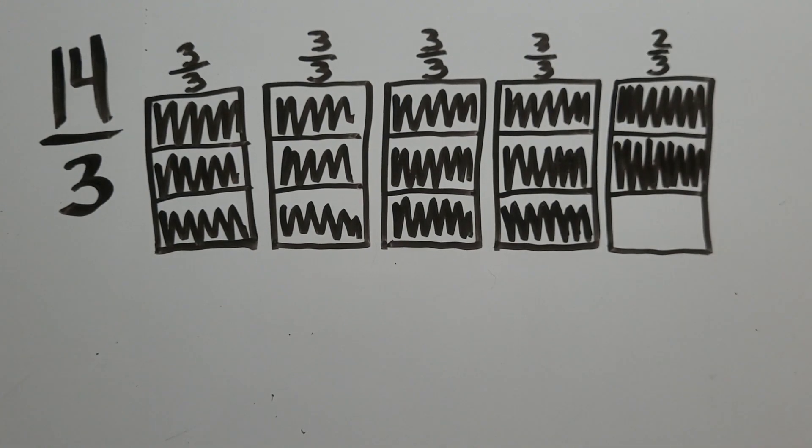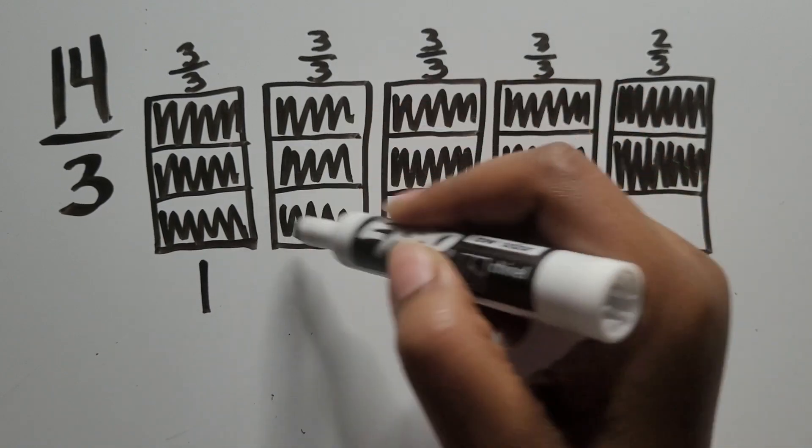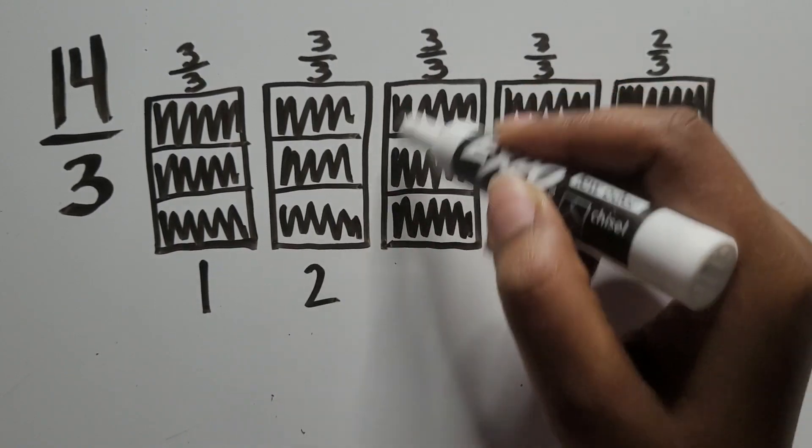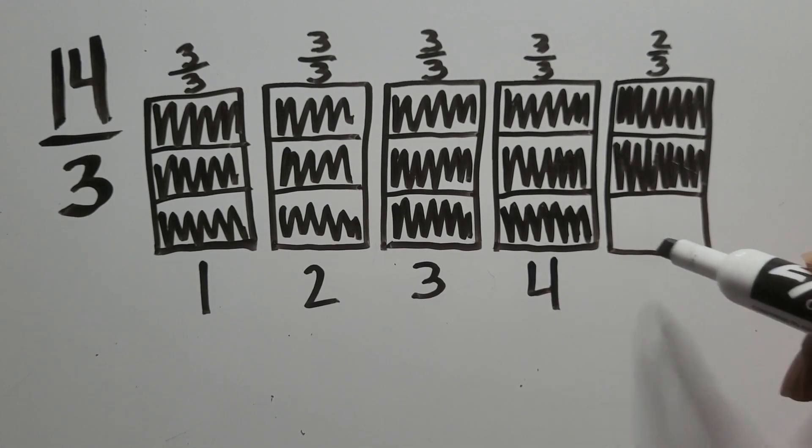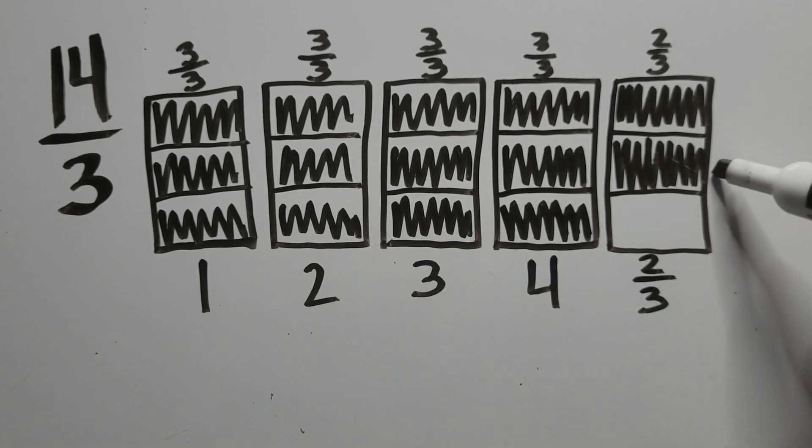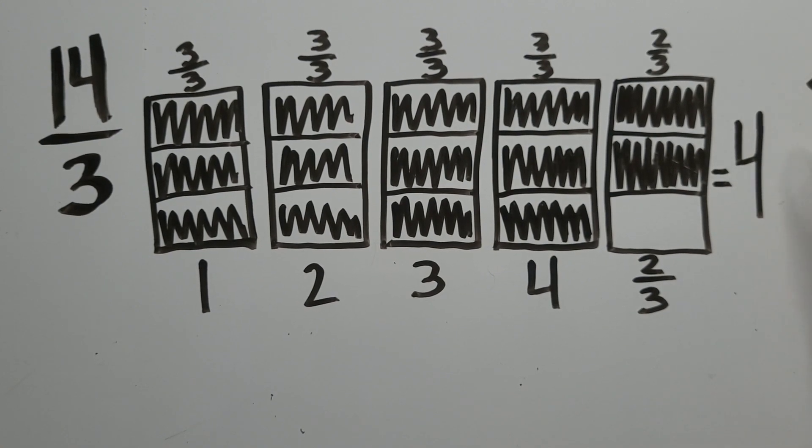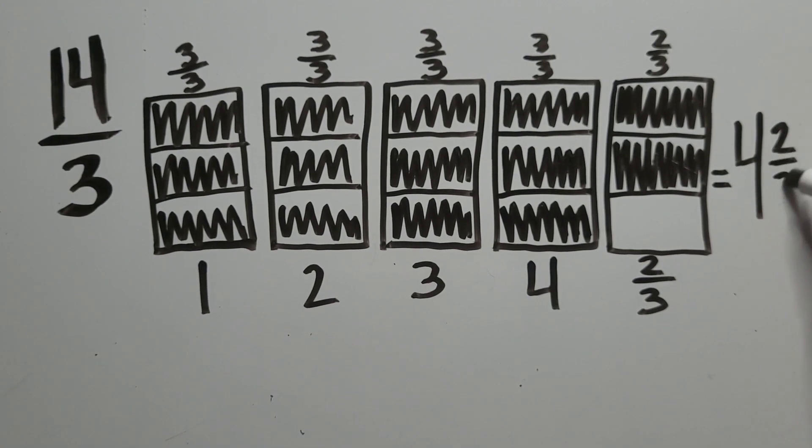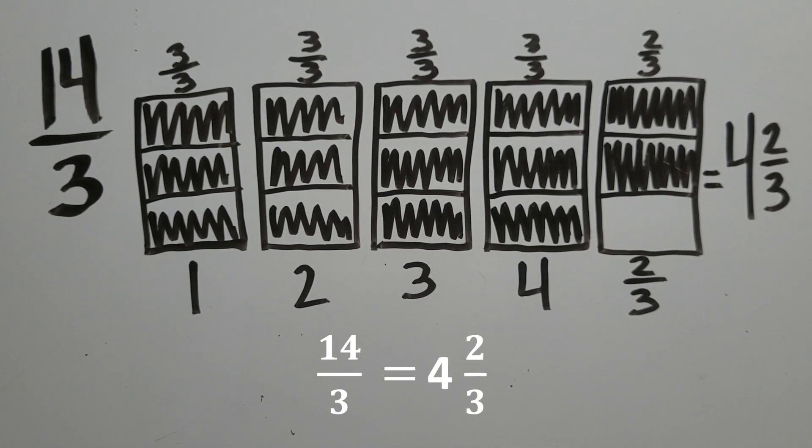Now let's count how many wholes that are completely shaded in. One, two, three, four wholes, and two extra thirds are shaded in. So with this model, we see that we have a total of four wholes and two thirds. 14 thirds is equal to four and two thirds.